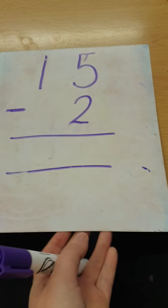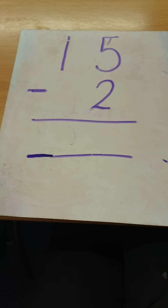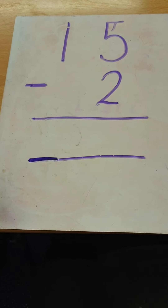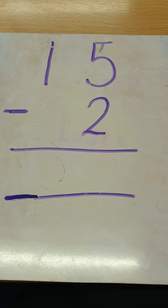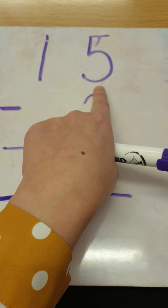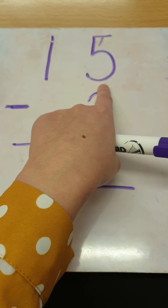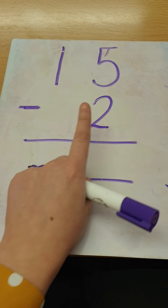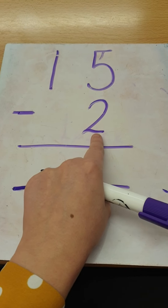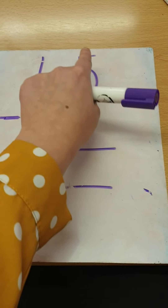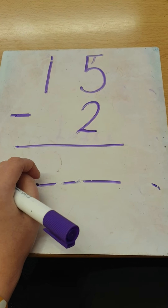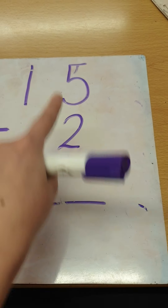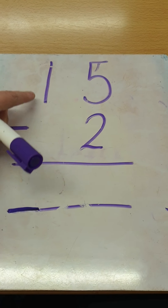I've got another one just like that. Can you read this sum to your grown-up? Excellent — it is 15 take away two. If I look at 15, it's got five ones and one ten. The number two — is it the tens or is it the ones? Excellent, it's the ones; it's in the ones column. Any number, to help you, the last digit is always the ones number. So I've got five ones and two ones, and one ten.